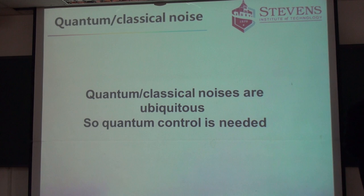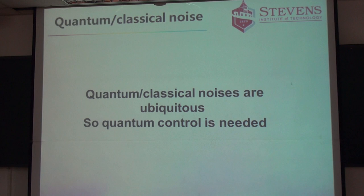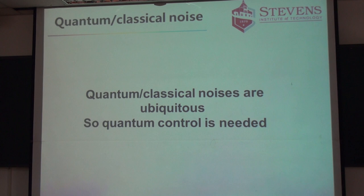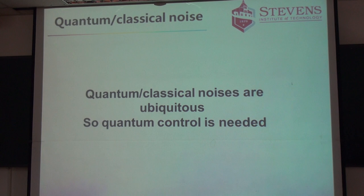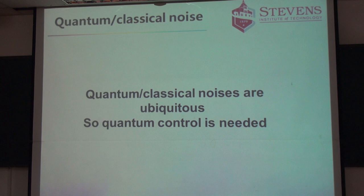In quantum computing and quantum information processing, the main obstacle is noise. In quantum optics, noise is everywhere — we have to deal with classical noise and quantum noise. The question in the context of quantum computing is simply how to control noise. If you look at the history of quantum information science, the quantum computer was proposed in 1985. But after about 30 years, why haven't we had a quantum computer? The reason is noise. Quantum control and quantum decoherence are the two most important concepts in quantum information science.